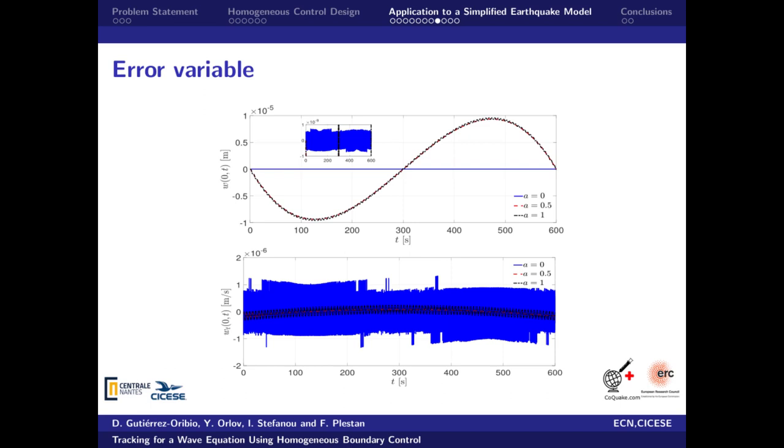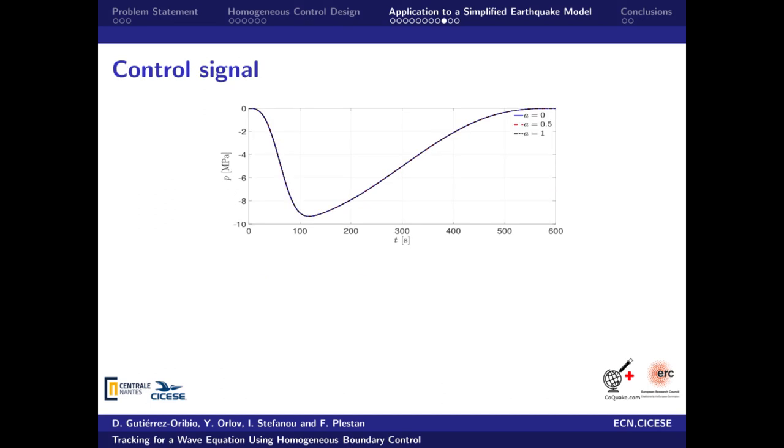The pressure injected into the fault for the three cases is practically the same and it's not affected by the chattering effect in the discontinuous case due to its small gains. It is important to mention that such control signals present acceptable magnitudes that can be followed by common actuators such as commercial pumps, making the control theoretically feasible to implement.